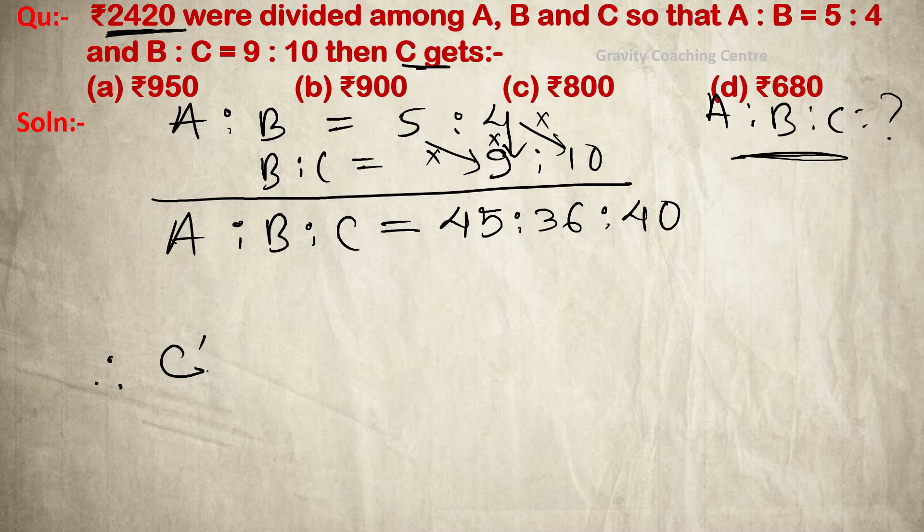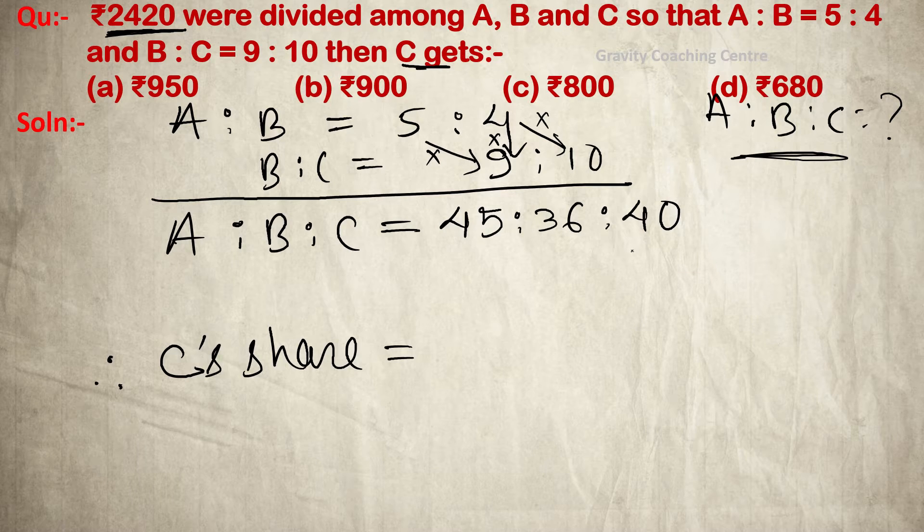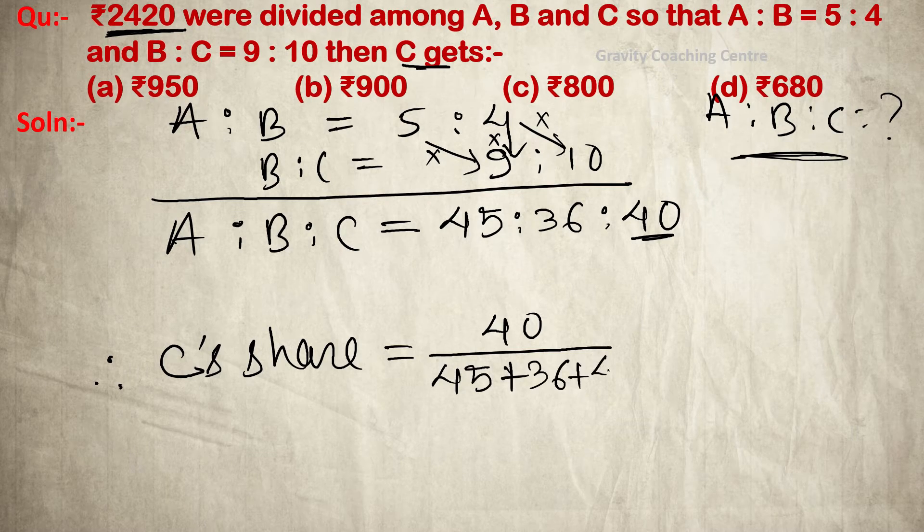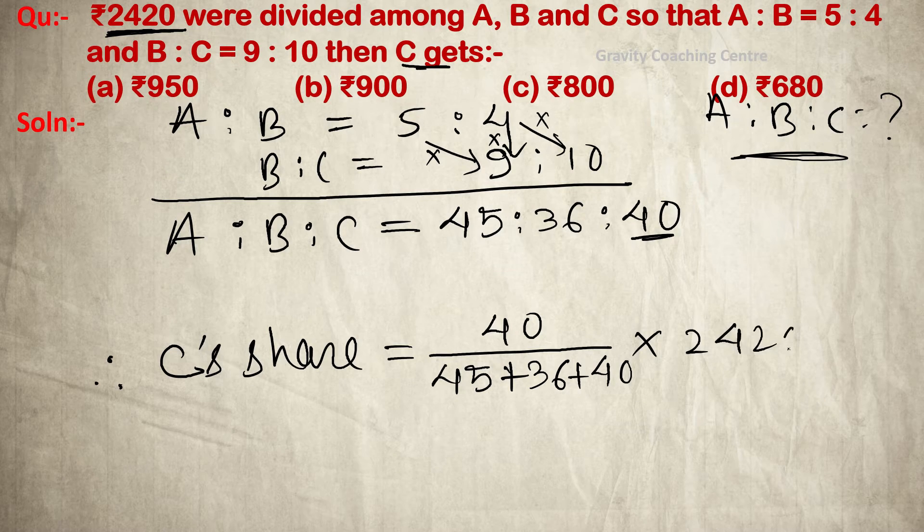C's share equals C's part of 40, so 40 upon 45 plus 36 plus 40, times the total amount ₹2420. So equal to 40 upon 121 times 2420.